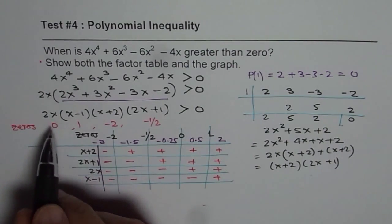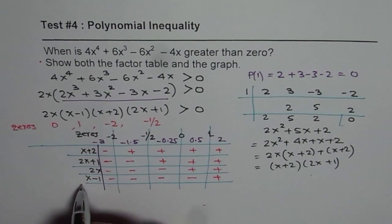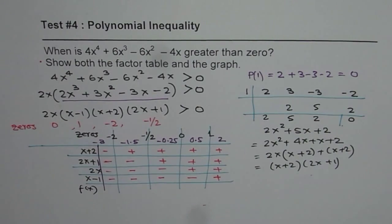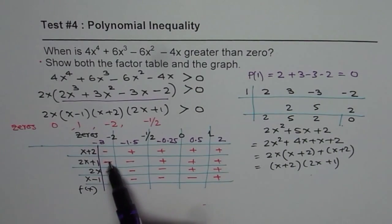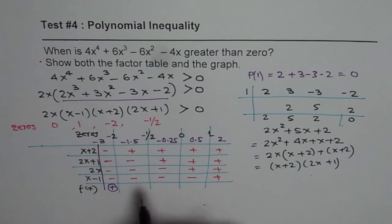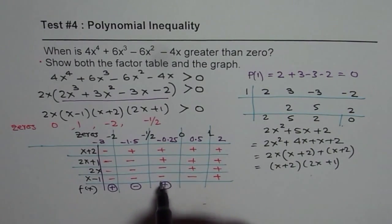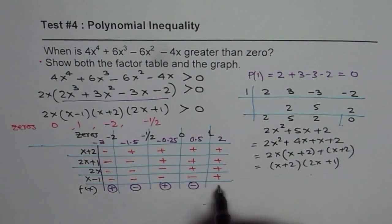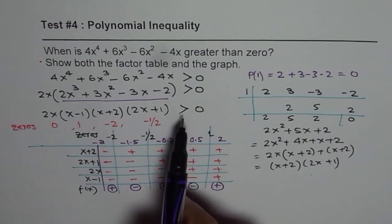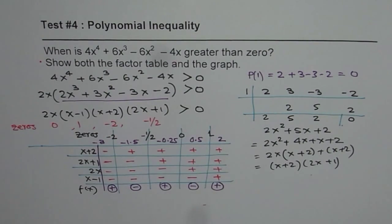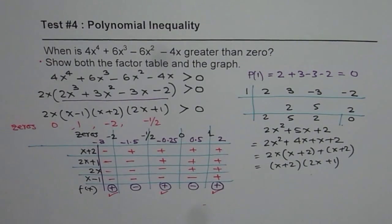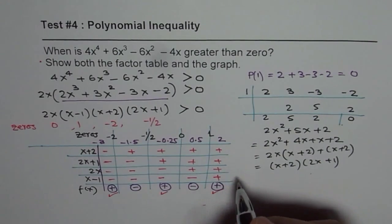Now as far as the function is concerned, which is product of all of these, let us count the number of negative signs. 1, 2, 3, 4. That will result in positive. 1, 2, 3 will result in negative. 2 will positive. The function is negative here and positive there. And therefore, we are looking for greater than 0. So our solution is indeed these answers. These are the intervals which are our solution.